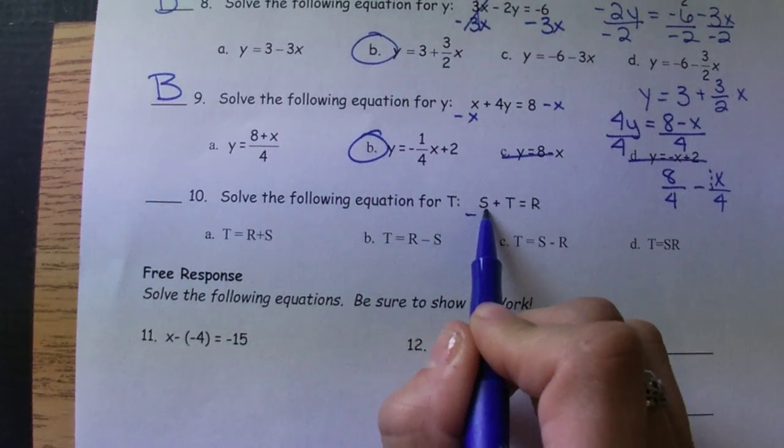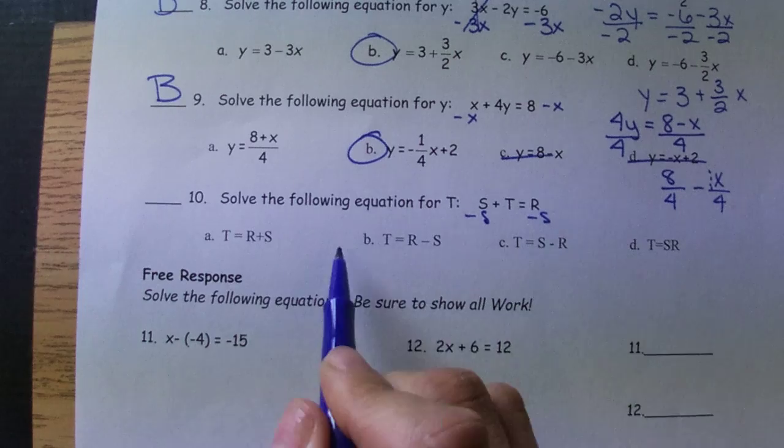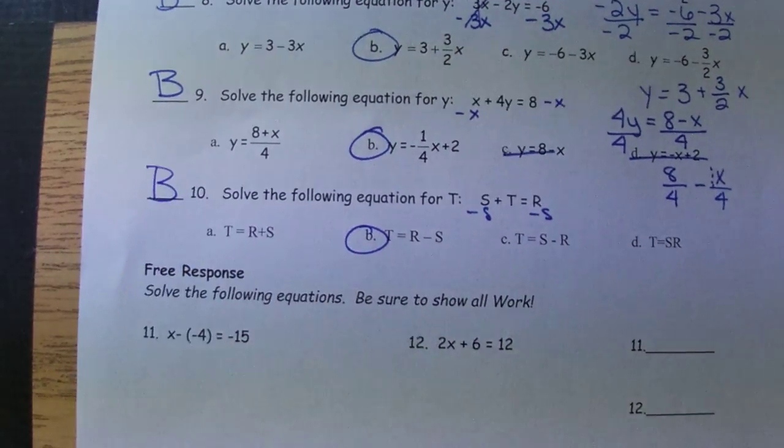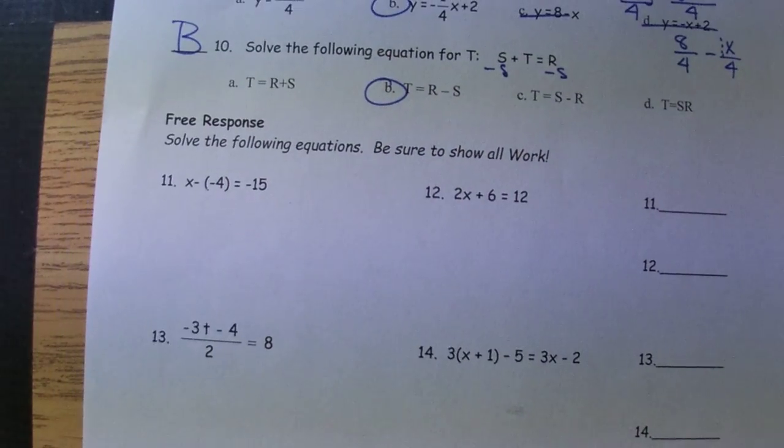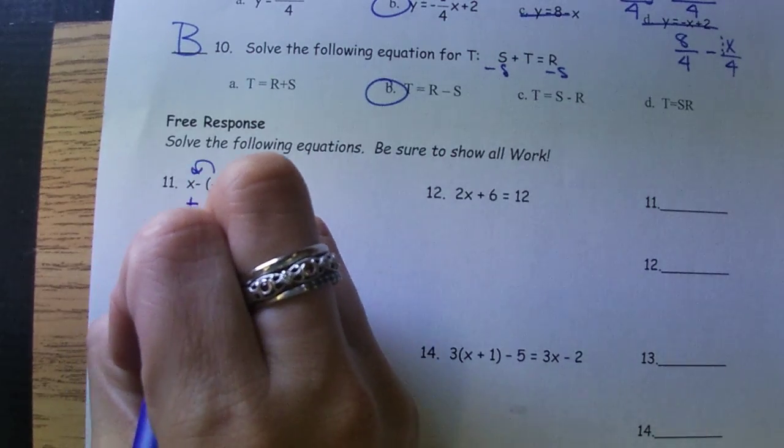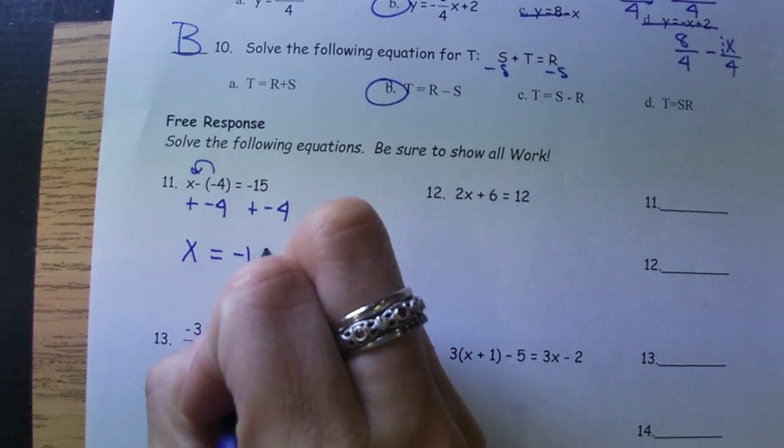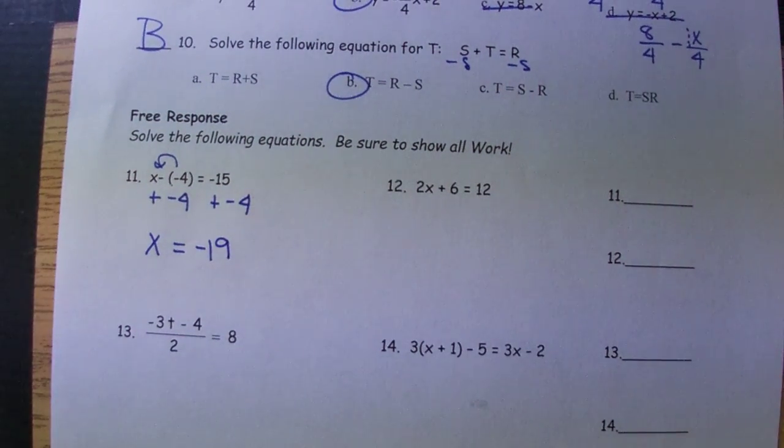Number 10, we're solving for T. So we'll undo a positive S by subtracting S. So T is R minus S, which is B. Number 11, right in front, we have subtraction. So we'll undo that with addition. I'm going to negative 19.